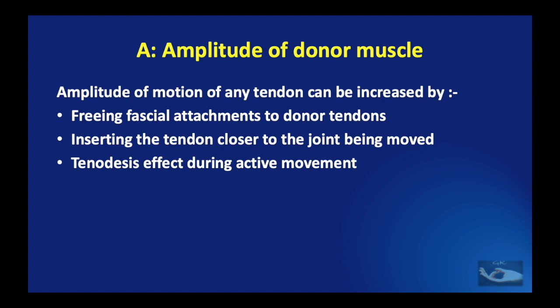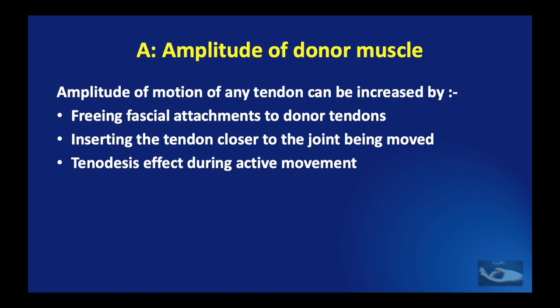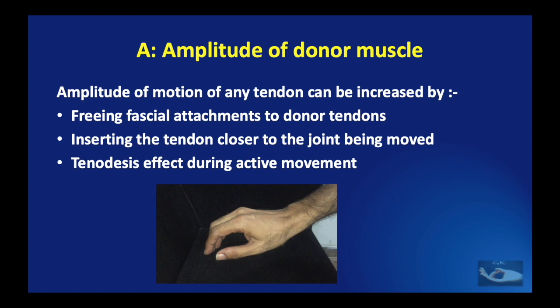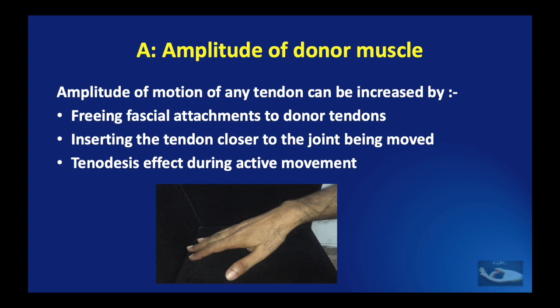This can be done by three techniques. The first is during surgery, freeing the fascial attachments to the donor tendons and dissecting the muscle almost completely, making sure that the neurovascular bundle is preserved. The second technique is to insert the tendon closer to the joint being moved. The third technique is the tenodesis effect during active movement: if we flex the wrist joint, we get an additional extension movement of the fingers of about 20 to 30 mm, which will achieve extension of the fingers.